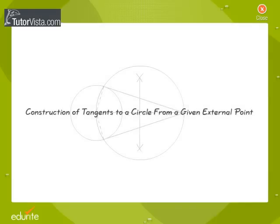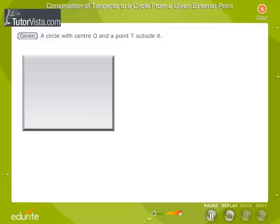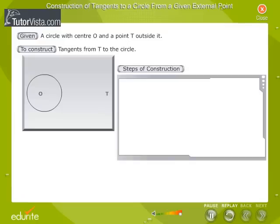Construction of tangents to a circle from a given external point. Given a circle with center O and point T outside it. To construct tangents from T to the circle, steps of construction are as follows.